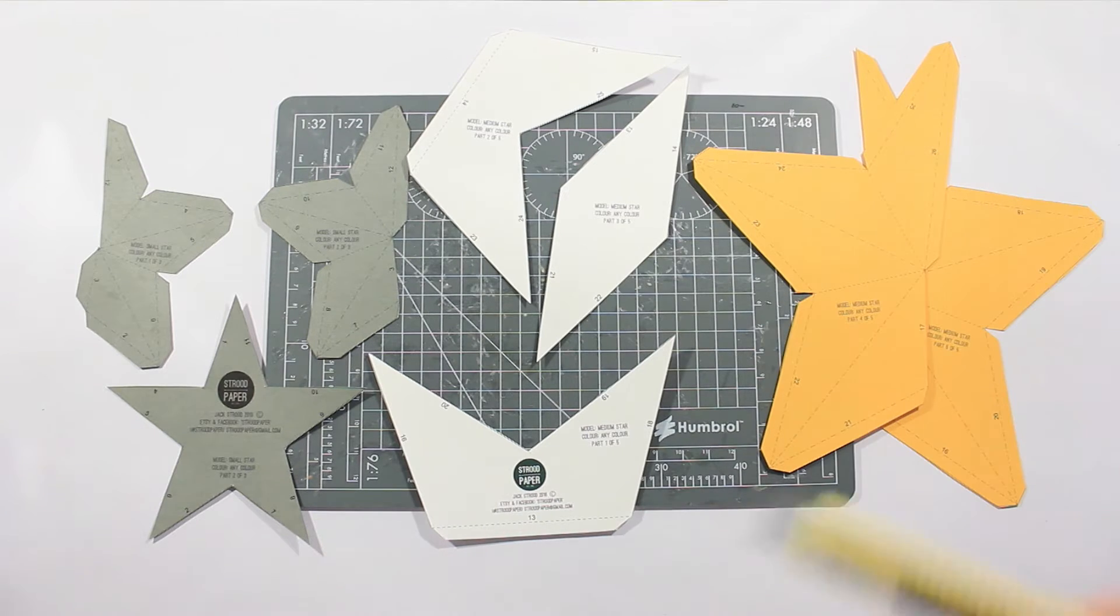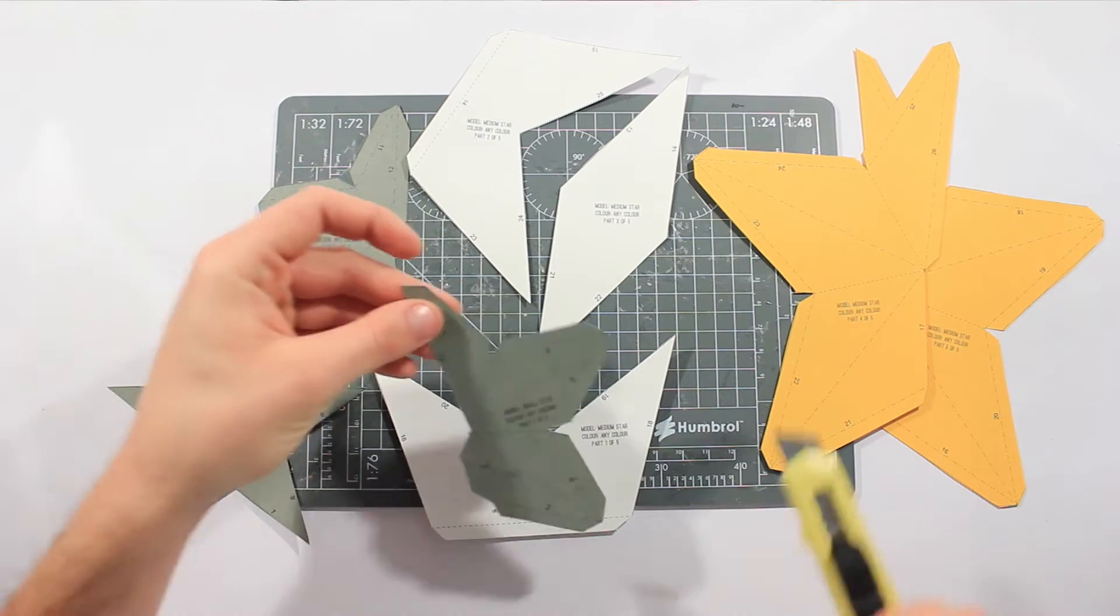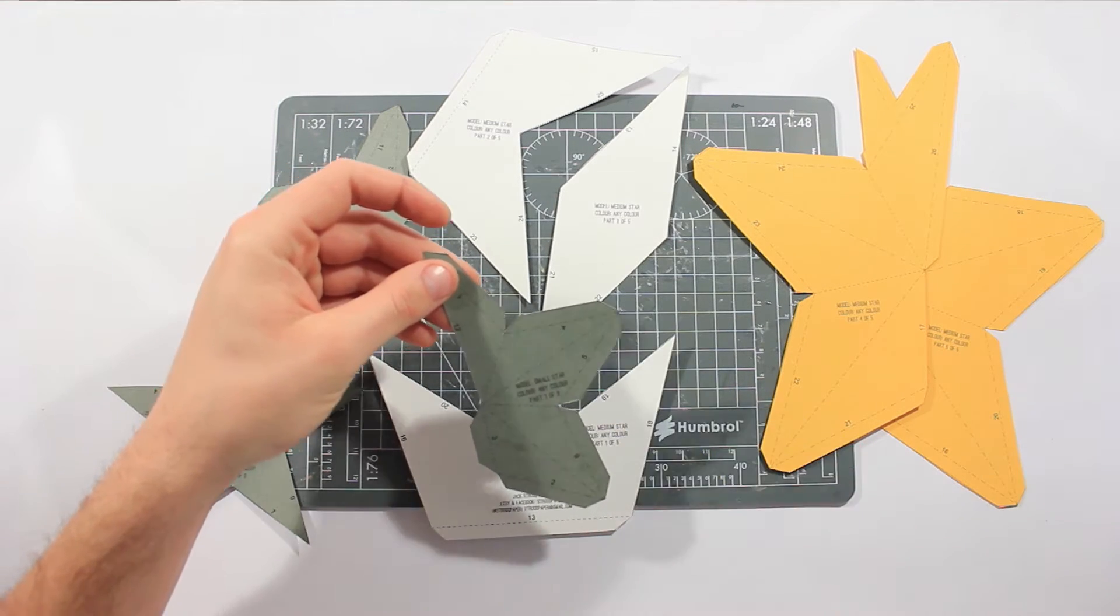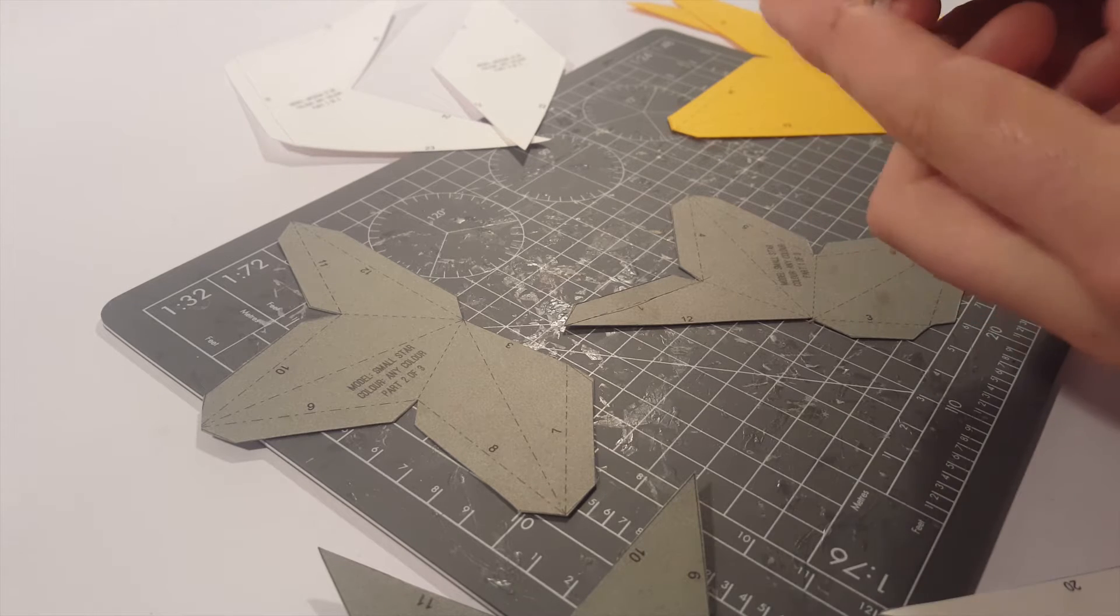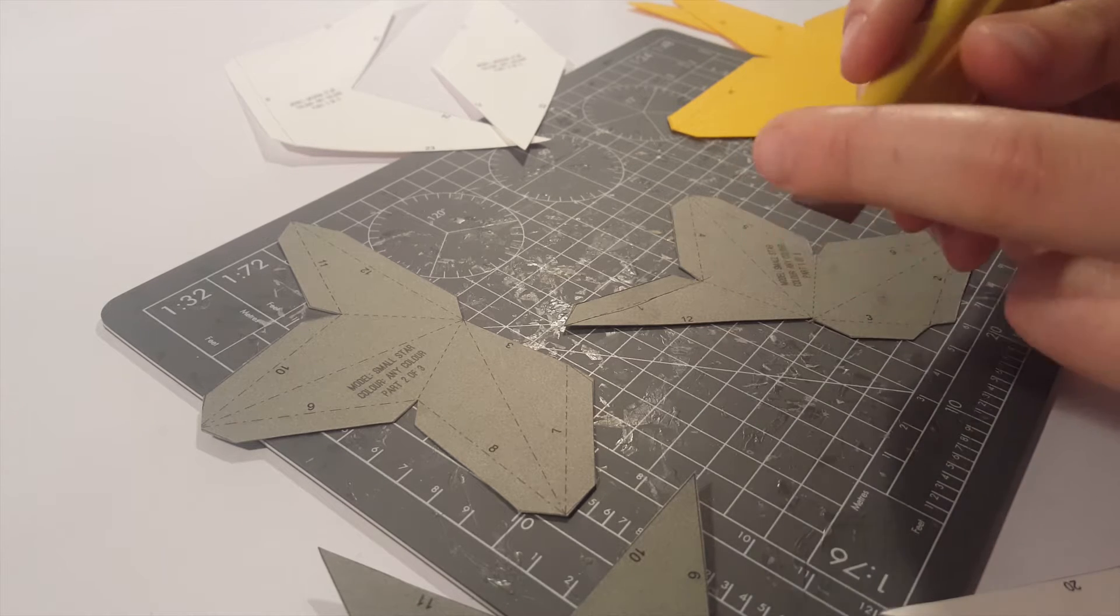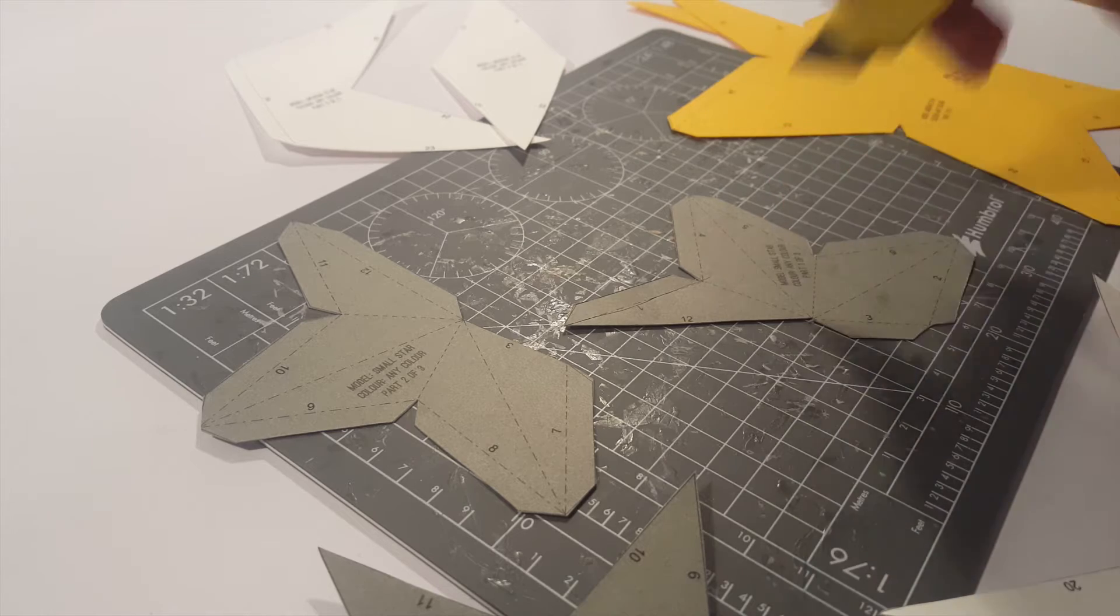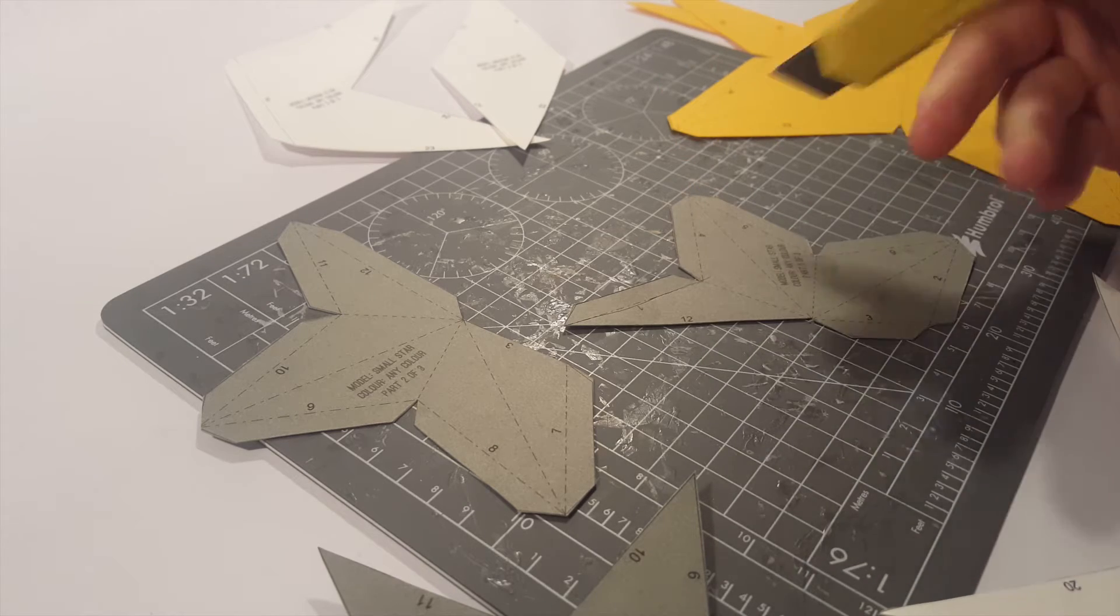Now what we need to do is just score the edges, because we need to fold the lines. Just a very quick recap on how to score the lines. The blunt edge of the knife there, not the sharp end, the blunt end, you just want to make an impression on the dotted line so it's easy to fold.